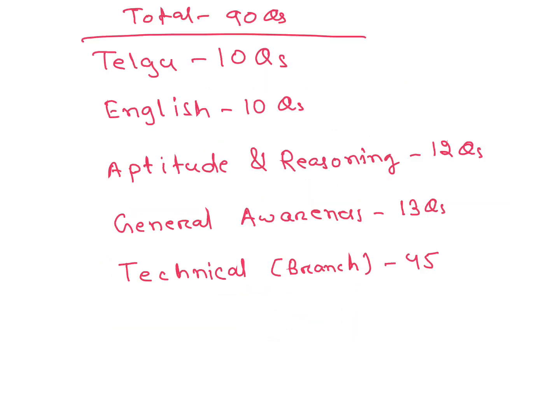Out of 90 questions: Telugu questions are 10, English is 10 questions, Aptitude and Reasoning is 12 questions, General Awareness is 13 questions, and Technical branch-related is 45 questions. Total is 90 questions.